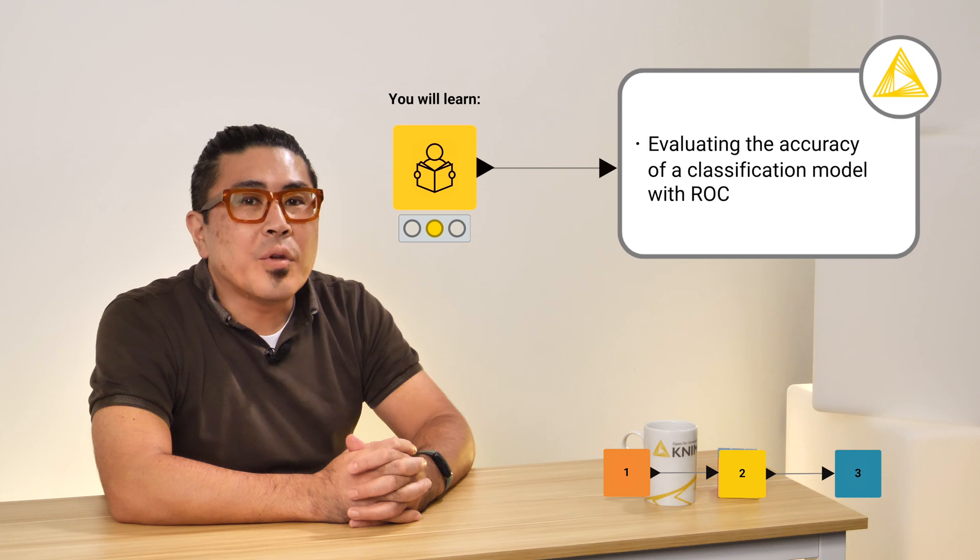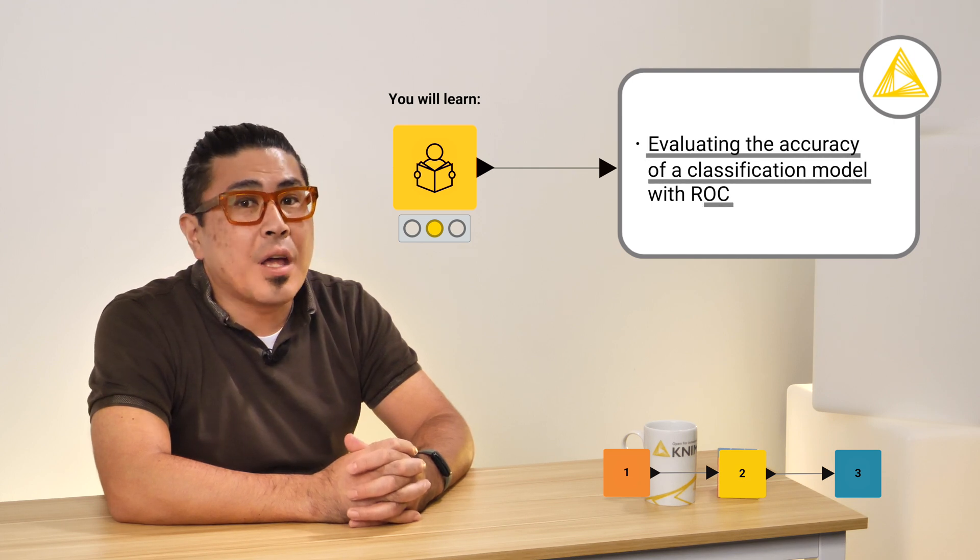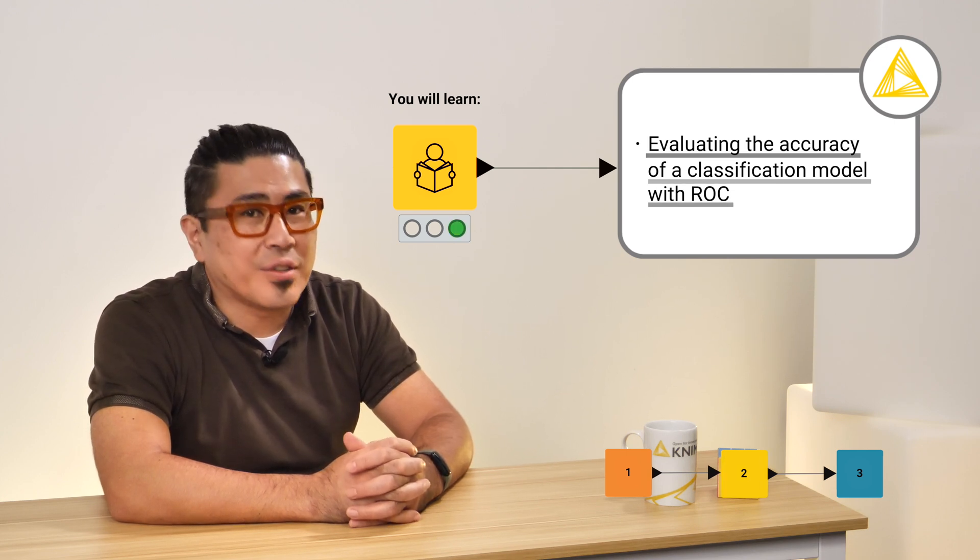In this video, you will learn about a commonly used method to evaluate the accuracy of a classification model called the Receiver Operating Characteristic, ROC Curve. Ready? Let's dive in.